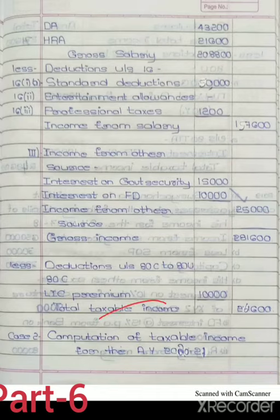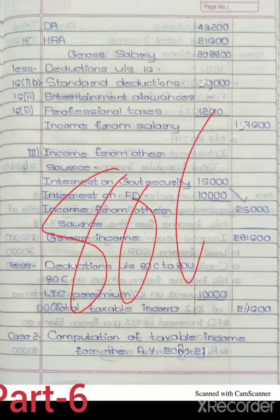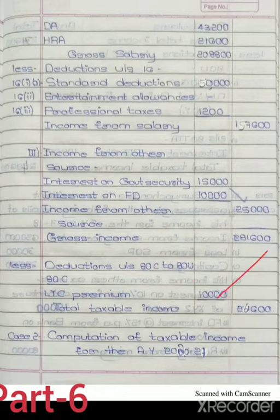To find taxable income, we deduct under sections 80C to 80U. First, 80C: LIC premium paid on own life is eligible to claim — 10,000. Donations are unapproved, so that donation is not eligible to claim under section 80G. So only 10,000 is deducted, giving taxable income of 2,61,600.